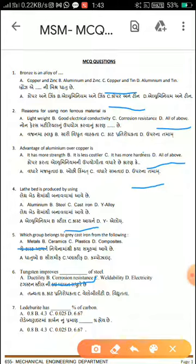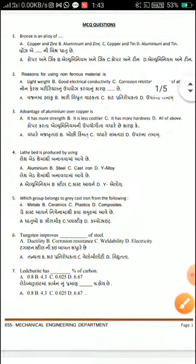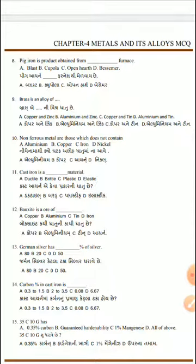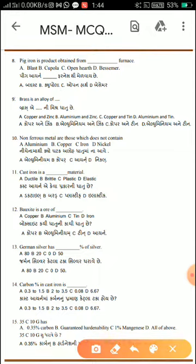Question number 8: Pig iron is a product obtained from blank furnace. Options are: blast furnace, cucumber, open hearth, and Bessemer. Pig iron is obtained from the blast furnace.